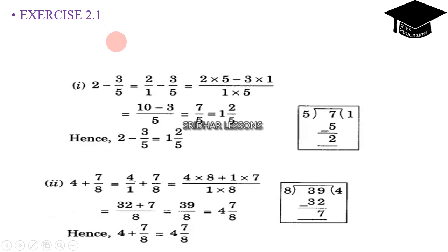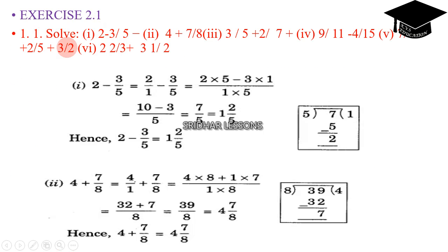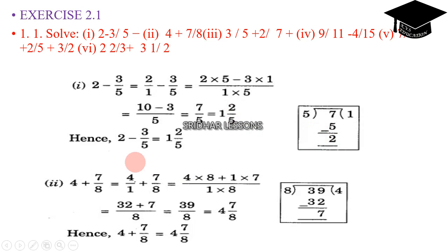We will see Exercise 2.1, 1st problem. Solve: 2 minus 3 by 5. We can rewrite 2 as 2 by 1, so 2 by 1 minus 3 by 5. Taking LCM as 5: 2 into 5 minus 3 into 1 gives 10 minus 3, which is equal to 7 by 5. Dividing 7 by 5, the remainder is 2 and quotient is 1. So the result is 1 and 2 by 5.